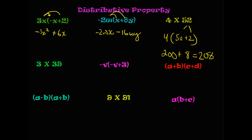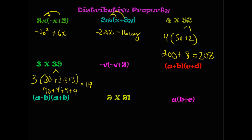For 3 times 39: break 39 into 30 plus 9. 3 times 30 is 90, and 3 times 9 is 27. 90 plus 27 is 117. Next: negative v times (negative v plus 3). Negative v times negative v — negative times negative is positive — gives v squared. Negative v times 3 is negative 3v.